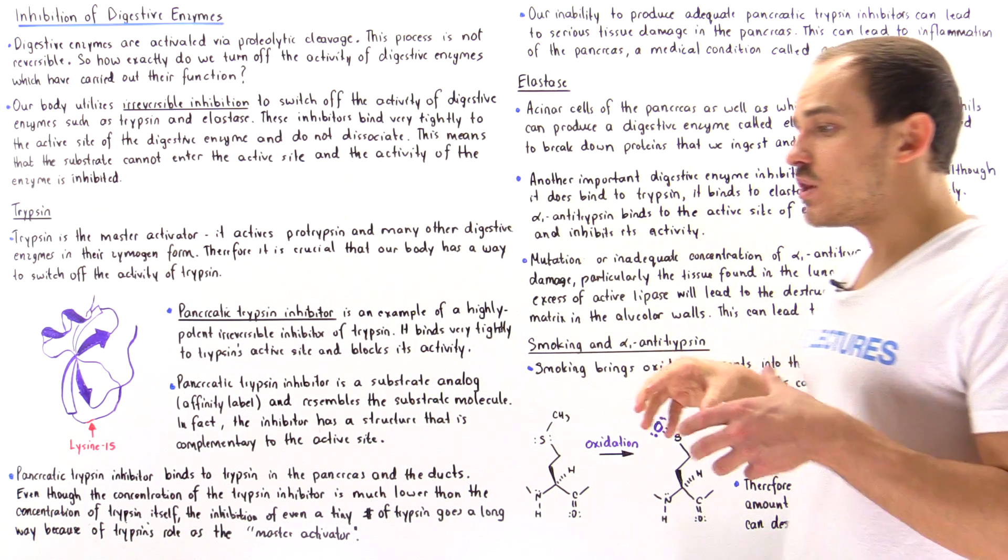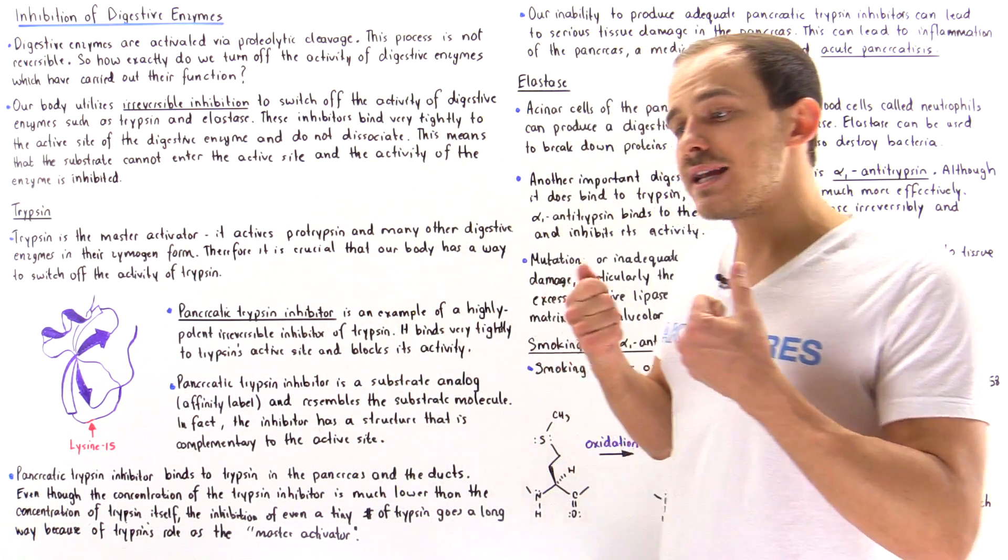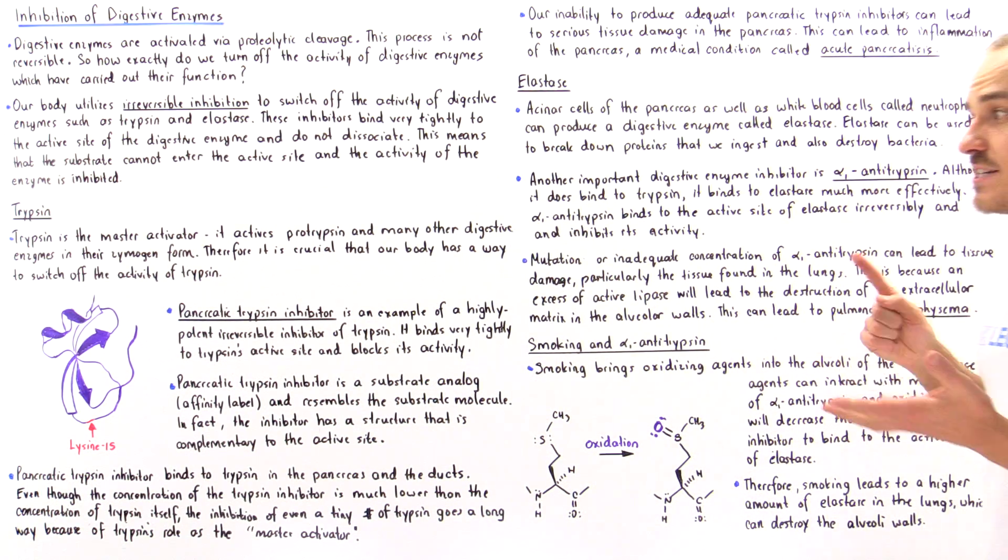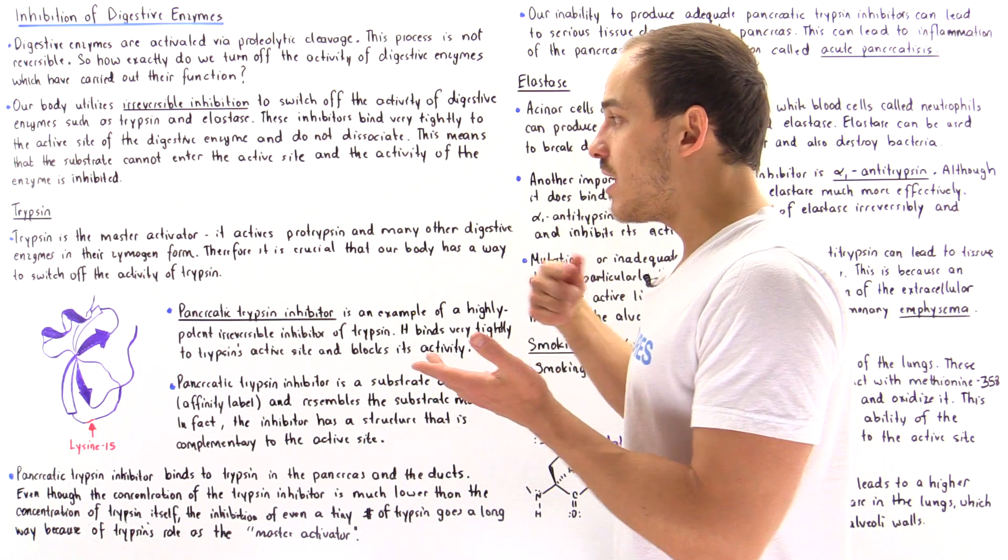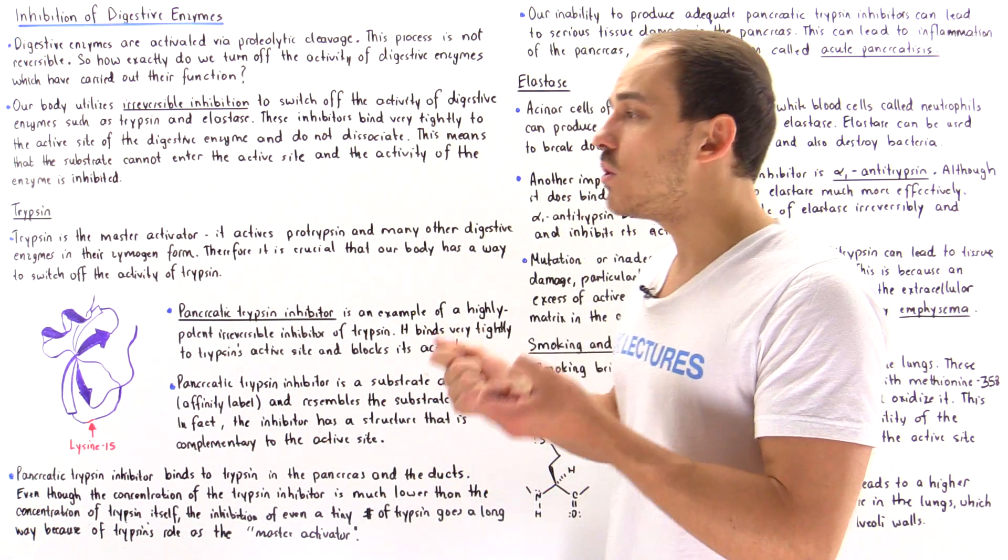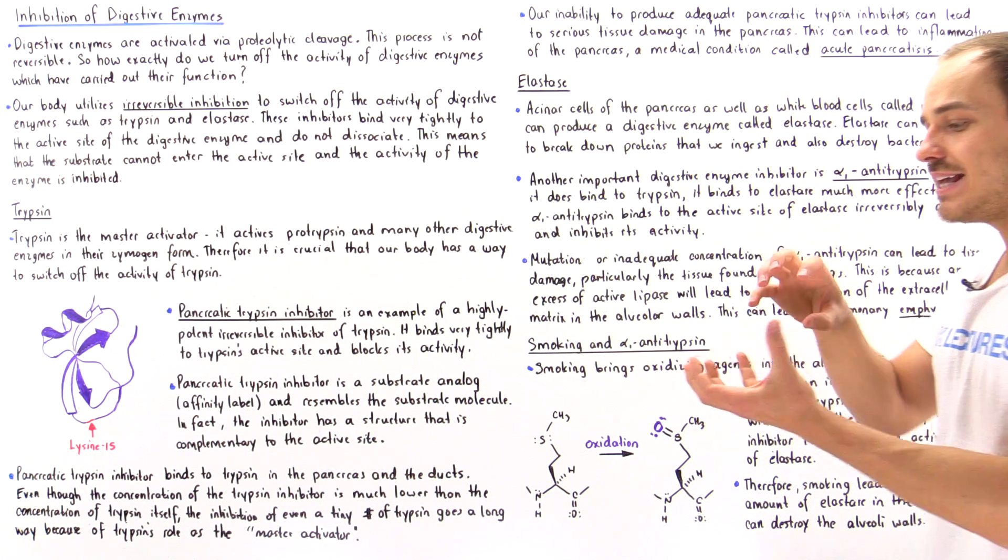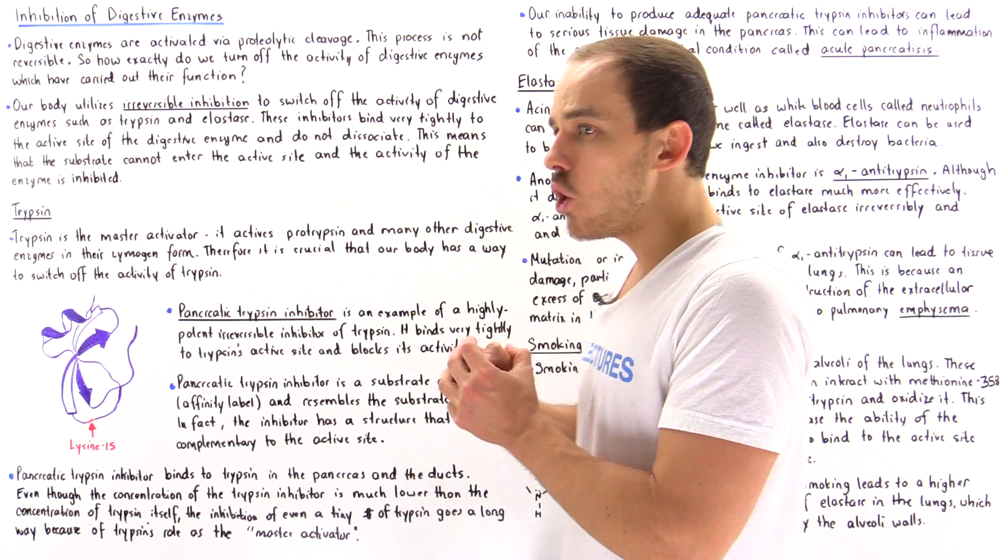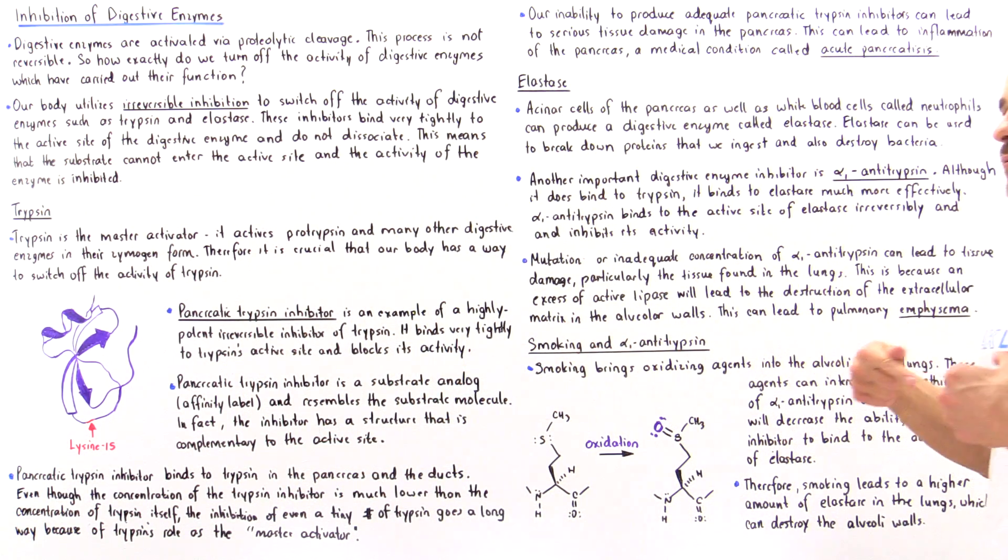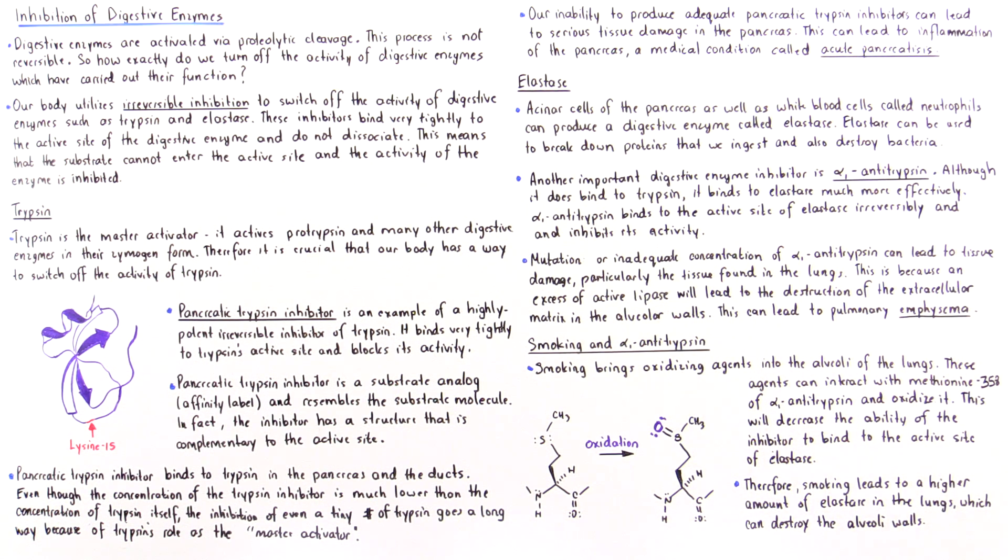And what that means is we'll have a higher concentration of elastase inside our lungs and a higher concentration of active elastase means that's going to destroy the tissue found in the alveoli of the lungs. And by destroying the tissue that changes the elasticity of those alveoli and that will make it much more difficult to breathe. We're going to have to breathe harder to exchange the same volume of air.